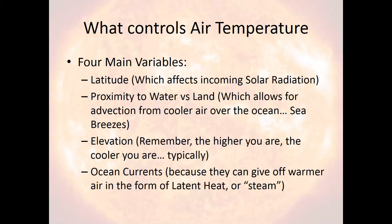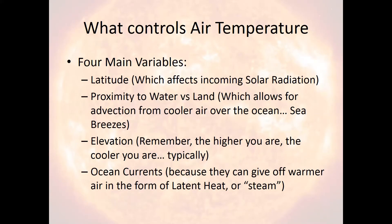We've talked primarily about daily temperature variations, but what about seasonal temperature variations? Different locations have different seasonal variations. Some locations have very little difference between winter and summer, while others have substantial differences. Some places get snow in the winter but none in the summer. Other places stay hot year-round, or are extremely cold in the winter and extremely hot in the summer.